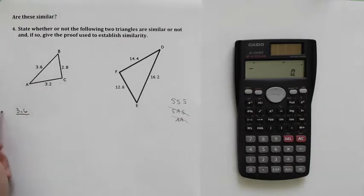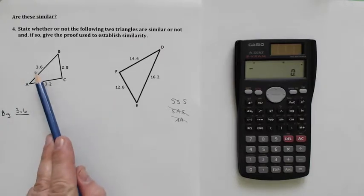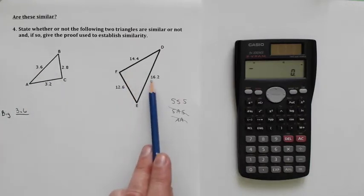And I'm going to divide that by, so I'll just write the word big there so you know what I'm doing. So the 3.6 is the biggest one here, and the biggest one here is going to be the 16.2.